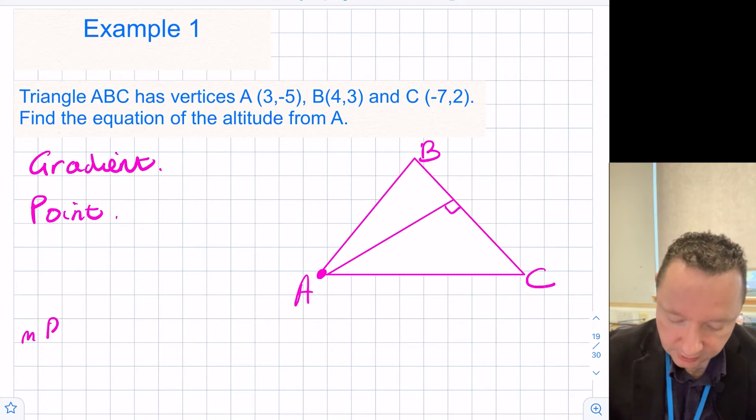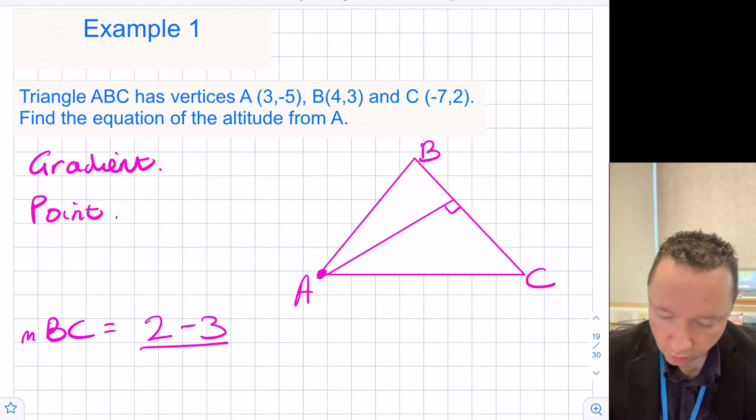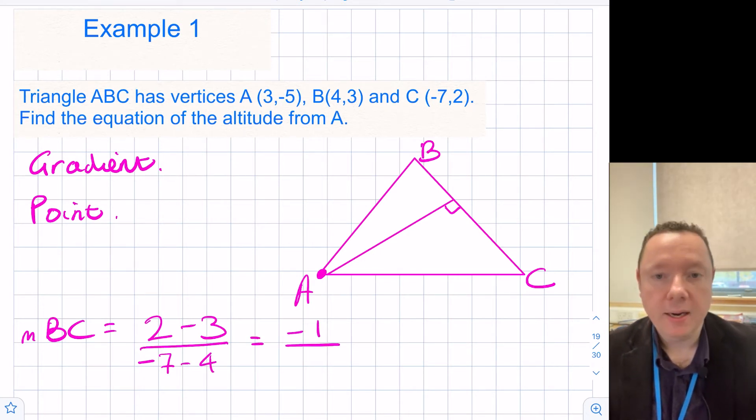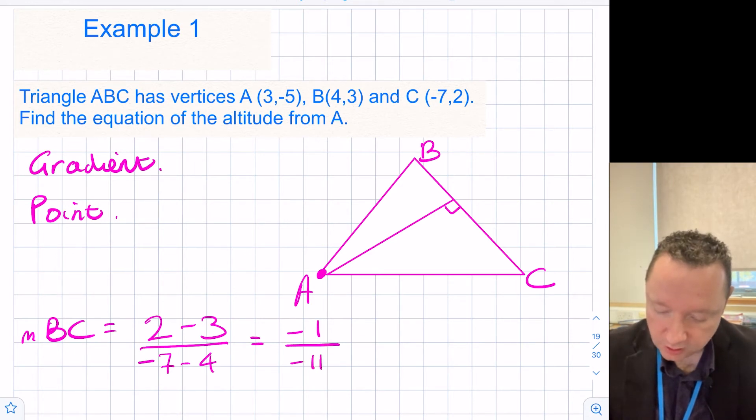The gradient of BC is equal to, well, 2 minus 3 over -7 minus 4. 2 minus 3 is -1. -7 minus 4 is -11. Or simplify that to just the 1 over 11.